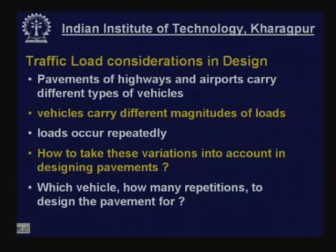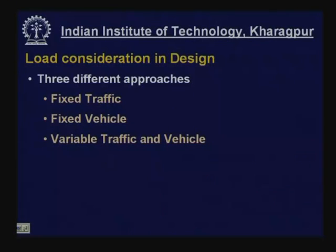How do we take these variations into account while designing pavements? There are going to be repetitions of loads of different magnitudes, so how do we account for all of these and arrive at one single number or load for input into pavement design? Load consideration in pavement design is usually adopted via three approaches: fixed traffic, fixed vehicle, and variable traffic/variable vehicle.